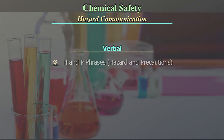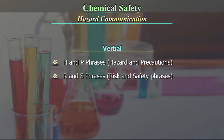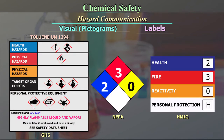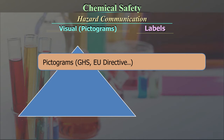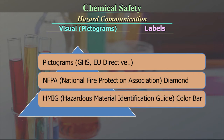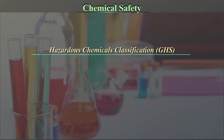Verbal communication includes H and P phrases (hazard and precautions), R and S phrases (risk and safety phrases), and MSDS or SDS — Material Safety Data Sheets. The visual hazard communications are of three kinds: labels, pictograms, and systems such as GHS, EU Directive, NFPA (National Fire Protection Association) Diamond, and HMIG (Hazardous Material Identification Guide) Color Bar.